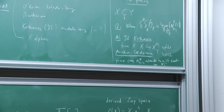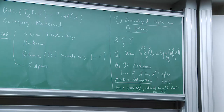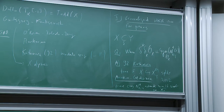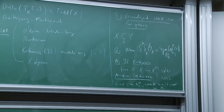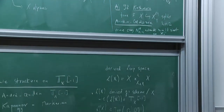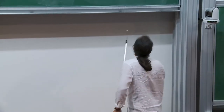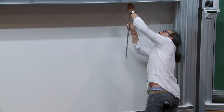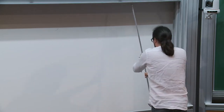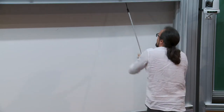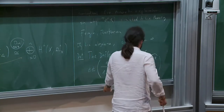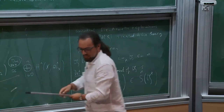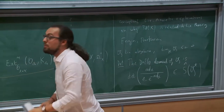Twenty years later it was proved that it is true if and only if the conormal bundle extends to a locally free sheaf on the first formal neighborhood. The isomorphism is X-linear in the derived category of O_X sheaves.